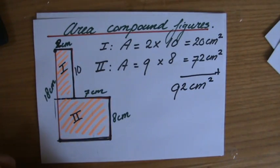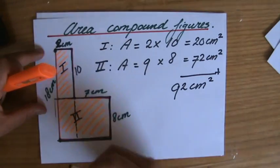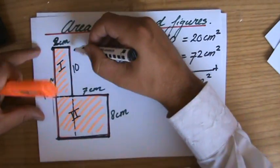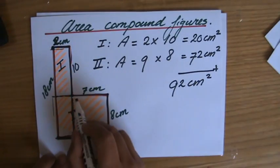72 plus 20: 92 centimeters squared. Fantastic. That's one way of doing it. You could also have cut it over here. Then you will have a big rectangle over here—a very long one, not very wide—and you'll have a rectangle over here.